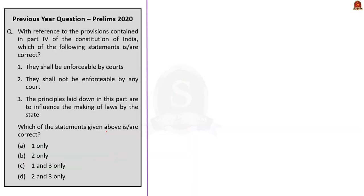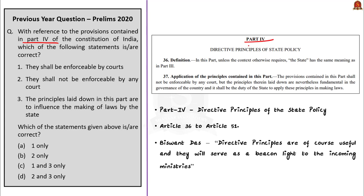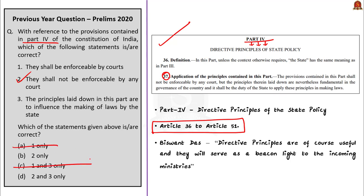The next question is about Part 4 of the constitution, which deals with Directive Principles of State Policy, covering Articles 36 to 51. The question is largely based on Article 37 of DPSP, which states that DPSP are not judicially enforceable in any court — so statement 2 is right, eliminating options A and C. Article 37 also states it shall be the duty of the state to apply these principles in making laws as they are fundamental in governance — statement 3 is correct. By elimination, the answer is option D. A general understanding of DPSP helps score this question.